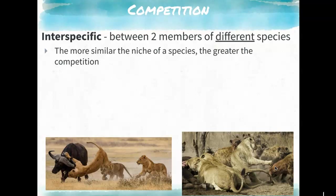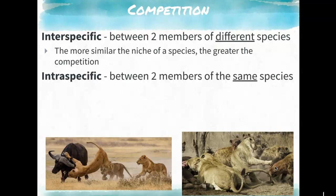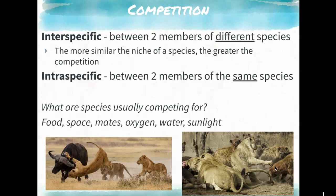Sometimes interspecific competition can deter species from living in the same area, causing one to move away. Intraspecific competition is between members of the same species. They could be competing for mates — for example, a male performing a display dance for a female who then chooses her mate. That's intraspecific competition.